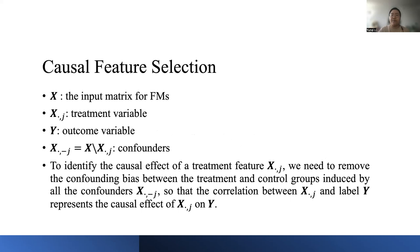To identify causal features, the most important problem is how to estimate their causal effects on the target variable. In this work, we refer to the confounder balancing approach for estimating the causal effect of features based on observational data. In specific, suppose the input matrix for FMs is X where every row of X is a training sample and every column of X is a feature. To identify the causal effect of the j-th feature X_j, we treat the feature X_j as a treatment variable, the label Y as the outcome variable, and all the remaining features X_{-j} as confounders.